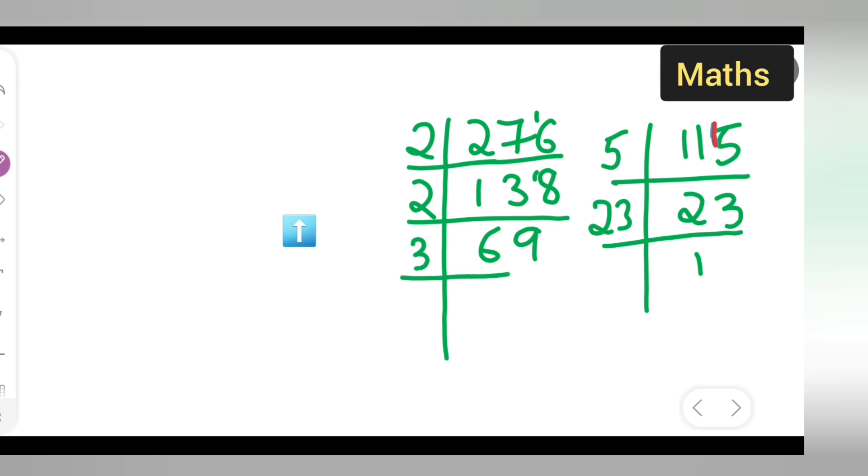Next, in the table of 3: 2 times 3 is 6, 3 times 3 is 9, 23 times 1 is 23. So basically, what is the HCF? Only common in both is 23. So what will be your HCF? Your HCF, the highest common factor, is 23.